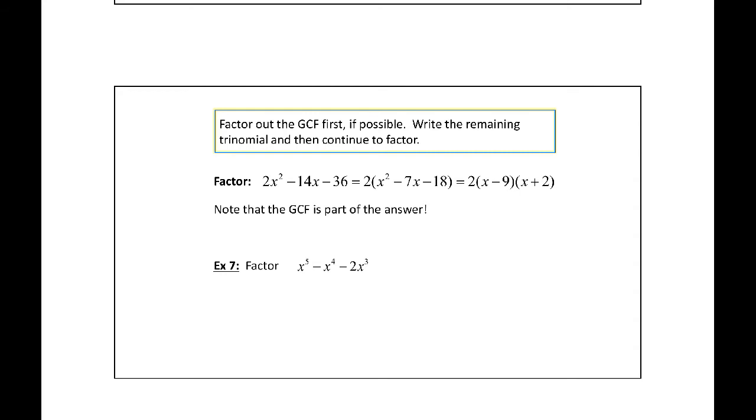From there, we could find numbers that multiply to be negative 18 that add to be negative 7, and those are negative 9 and positive 2. Notice that the 2, the greatest common factor, is part of the answer.